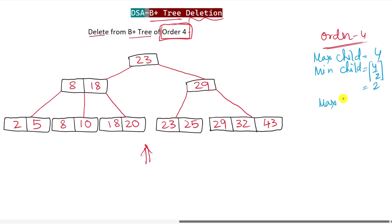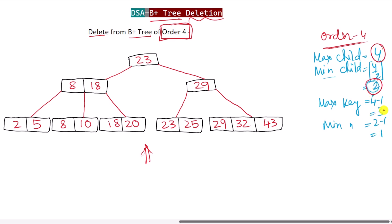The maximum number of keys any node can have is order minus 1, so that is 3. The minimum number of keys any node can have is minimum children minus 1, so that is 2 minus 1, which equals 1. These values — max children, min children, max keys, and min keys — are very important.